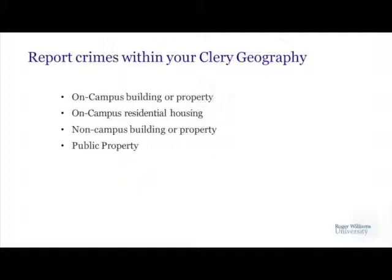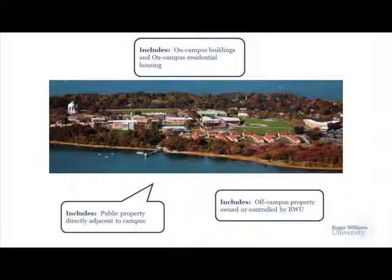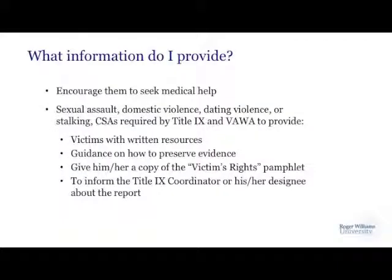Report crimes within your Clery geography. The Clery geography for Roger Williams University on-campus buildings or property would be the residence halls, academic buildings, and anything within the core campus. Non-campus buildings would be anything outside of the core campus and outside of the geography. Public property would be city streets or parking lots, roadways, anything adjacent to the core campus and core geography. This map depicts what includes on-campus buildings, on-campus residential housing, public property, and off-campus property owned or controlled by the university.